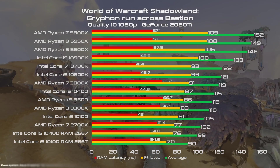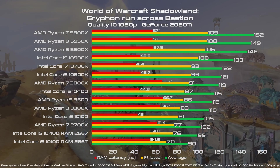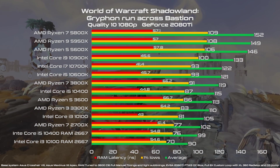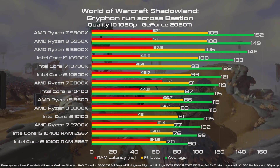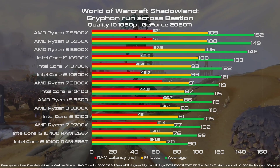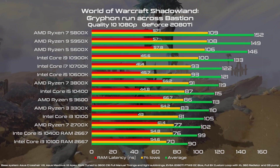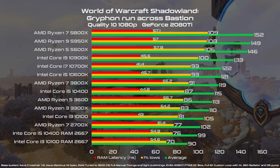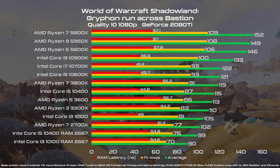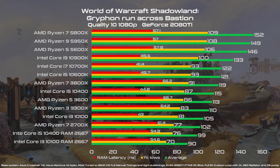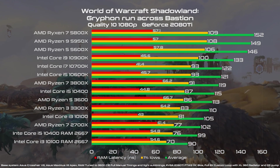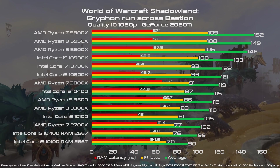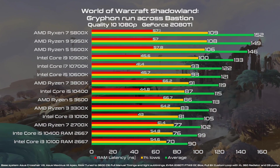Looking at this chart, it's pretty clear that the Zen 3 are a step ahead even over the flagship i9-10900K. And what is really impressive is the leap in performance over the past generation. Looking at the 3800X and even the 2700X, we are talking about a 27 to almost 50% increase, and it's really stunning.